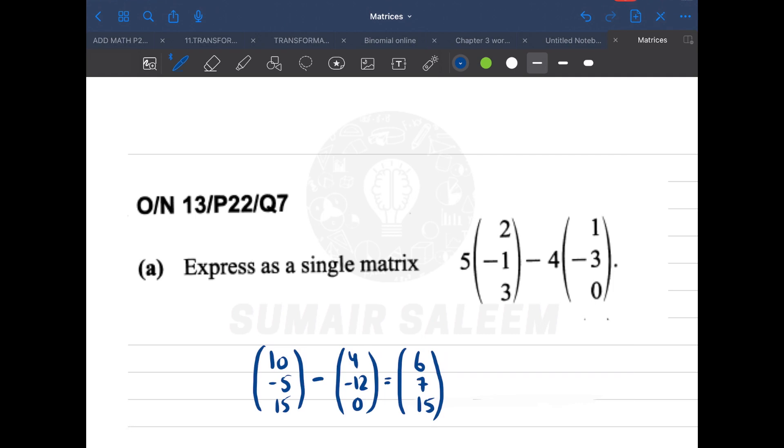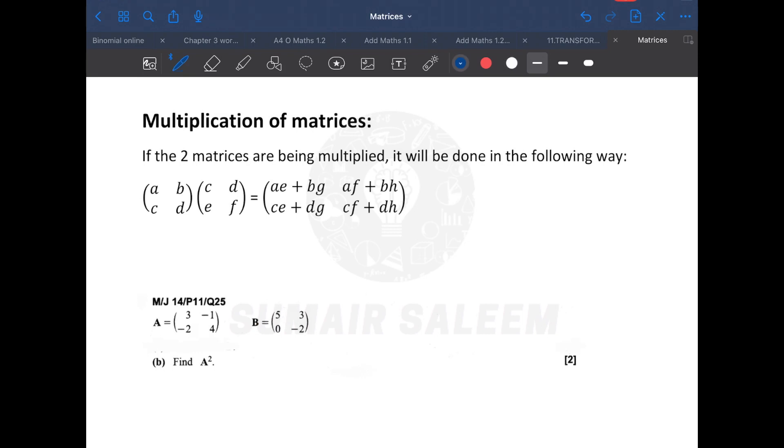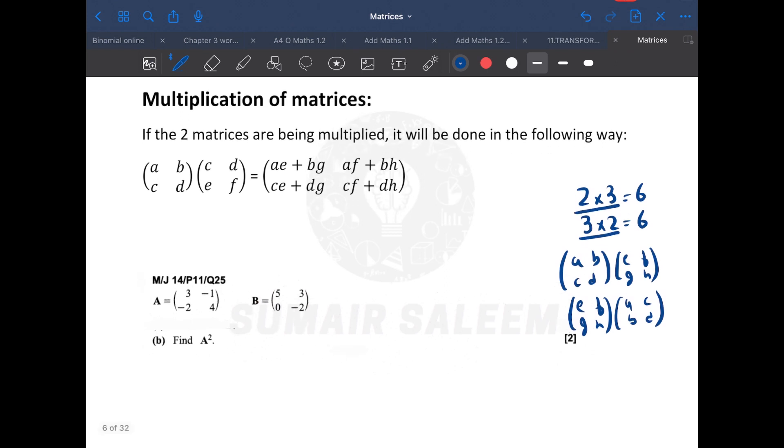Now let's proceed to multiplication. So first thing you should know: 2 into 3 is 6, and 3 into 2 is 6. But in matrices, if I multiply A, B, C, D and E, F, G, H, or if I multiply E, F, G, H and A, B, C, D, my answers won't be the same. So 2 times 3 is 6, and 3 times 2 is also 6. But in matrices, that's not possible.